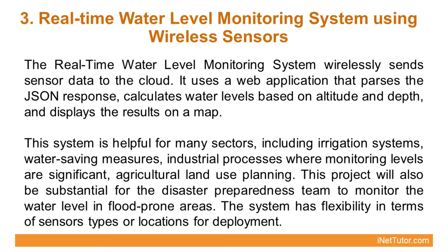The real-time water level monitoring system wirelessly sends sensor data to the cloud. It uses a web application that parses the JSON response, calculates water levels based on altitude and depth, and displays the results on a map. This system is helpful for many sectors, including irrigation systems, water-saving measures, industrial processes where monitoring levels are significant, and agricultural land use planning. This project will also be substantial for the disaster preparedness team to monitor water levels in flood-prone areas. The system has flexibility in terms of sensor types and locations for deployment.